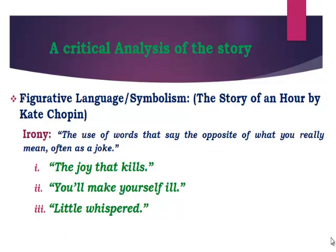We come across figurative language and symbolism in almost every line of this story, and most of the figurative language is written in an ironical way. Irony is defined as the use of words that say the opposite of what you really mean, often as a joke. There are three ironic samples from this story. The first is 'the joy that kills' — society thinks Louise dies because of joy, but she actually dies because of disappointment.